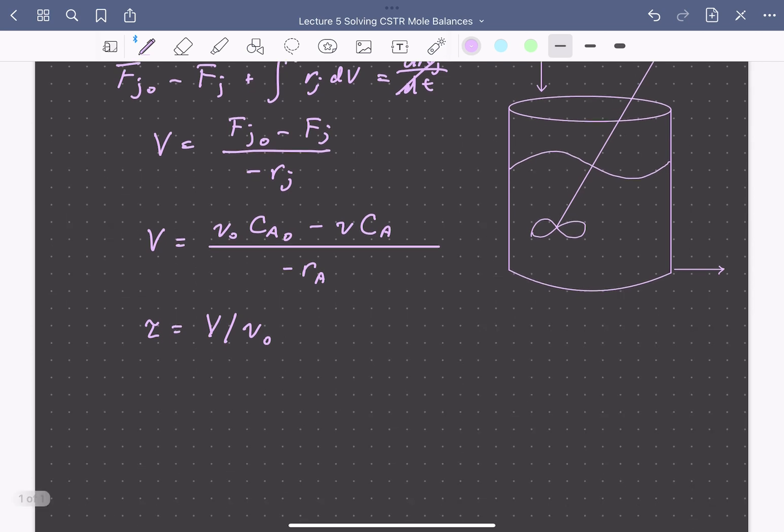So if we do this, we can solve explicitly for the residence time tau. It's the reactor volume over the inlet volumetric flow rate, and that's equal to the inlet concentration of A minus the outlet over the rate of consumption of A.